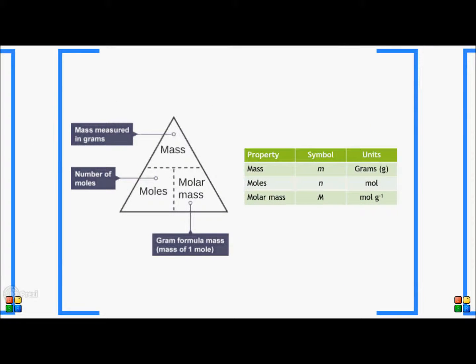Each one of these parameters has its own symbol. Mass is represented by lowercase m, moles is represented by lowercase n, and molar mass is represented by capital M. It's very important that you remember what each of these are and are able to distinguish them from other symbols used in chemistry — it can get very confusing as a lot of these symbols look very similar. The unit for mass is grams, which is not the SI unit, but we use grams because this is the scale chemists often work in. The unit for moles is mole, which is the SI unit, and the molar mass is grams per mole.